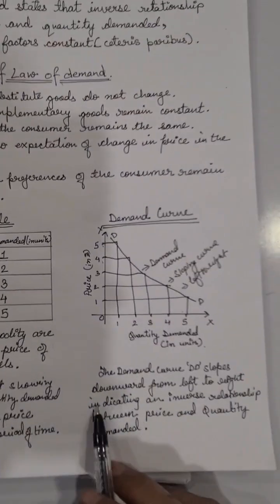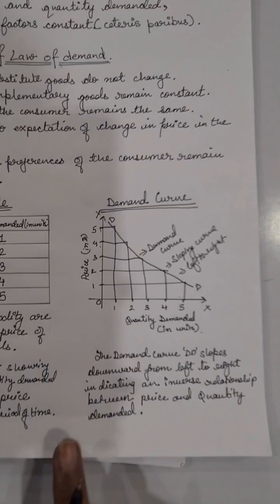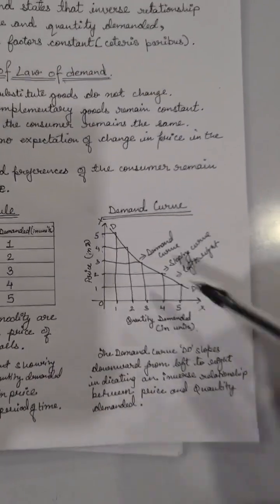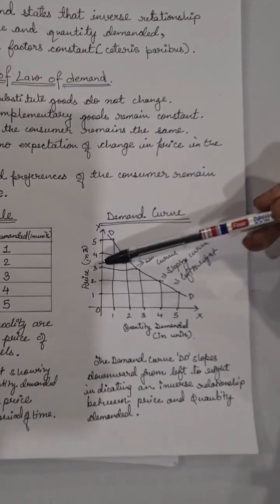The demand curve DD slopes downward from left to right, indicating an inverse relationship between price and quantity demanded. This slope from left to right shows the inverse relationship.